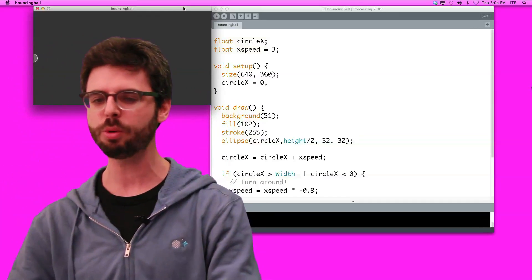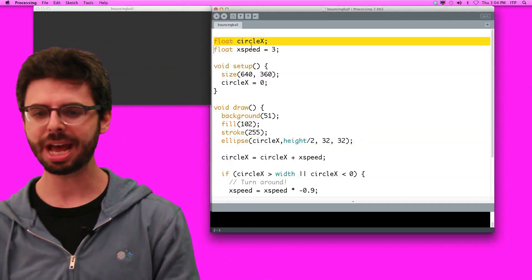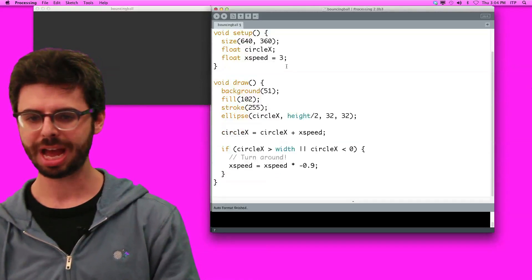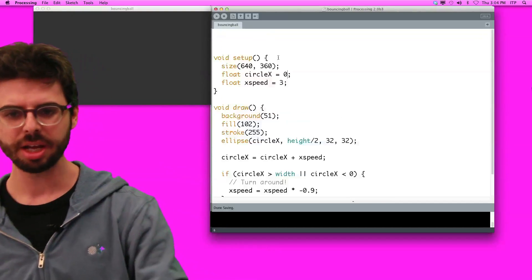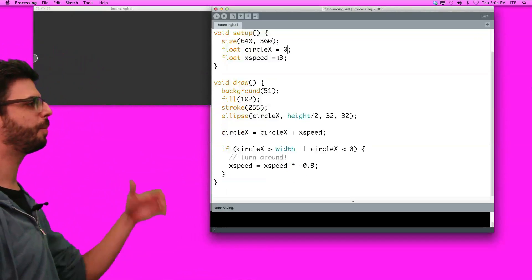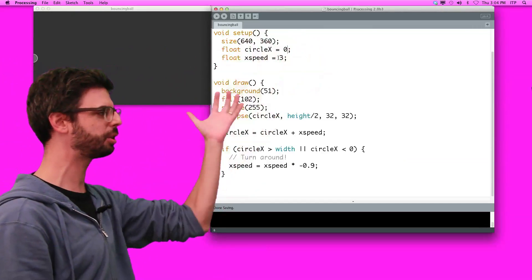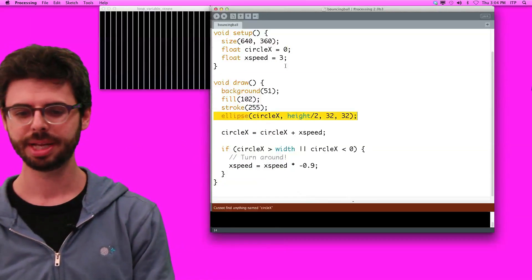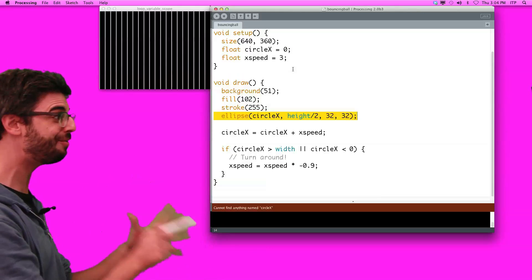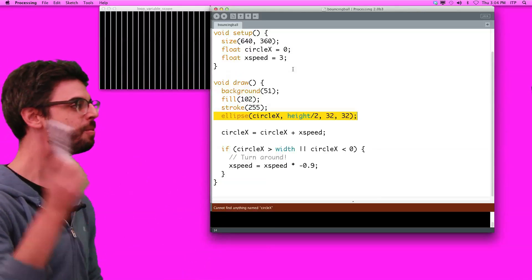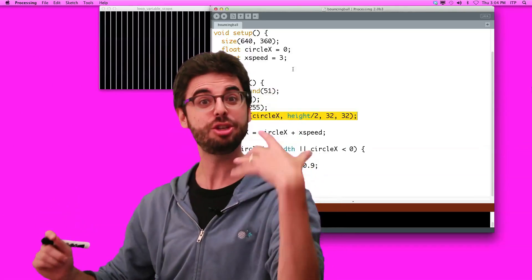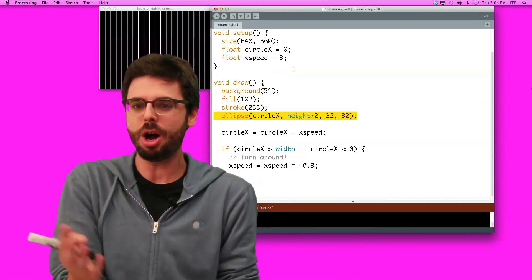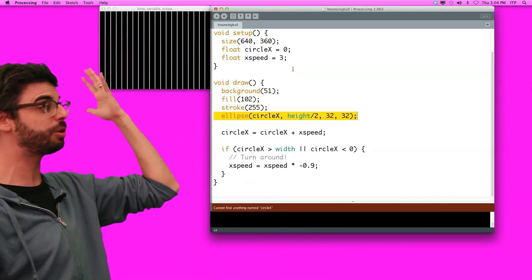What would happen if by accident we weren't really paying attention one day, and instead, we wrote our code like this, right? We have circle x equal... We say, OK, what's happening at the beginning of our program? We say we want to use a variable called circle x at 0, and x speed, which is 3, and then we're going to use those variables later in our program. If I run this code, it says down here at the bottom, cannot find anything named circle x. That is the error message you get when you're trying to use a variable that you never declared your intention to use in the first place.